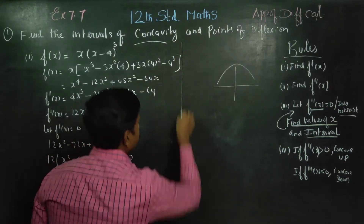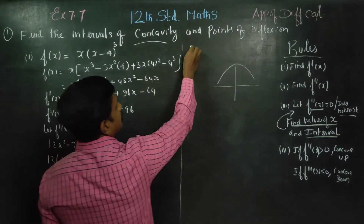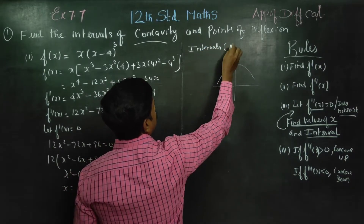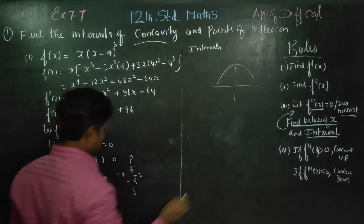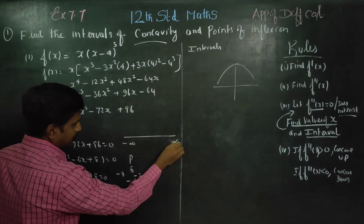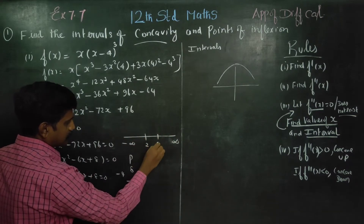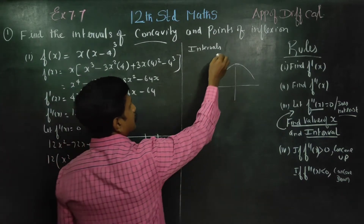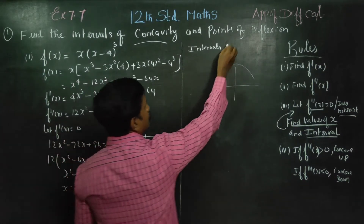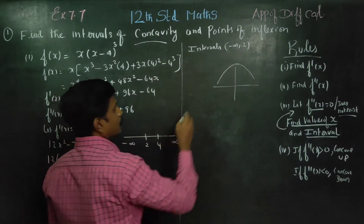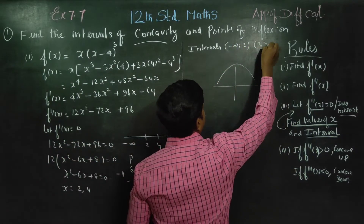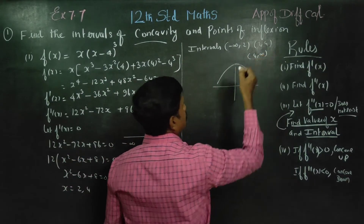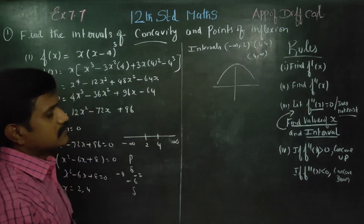What are my intervals? The x values are 2 and 4. On a number line from minus infinity to plus infinity, these divide it into three intervals: minus infinity to 2, then 2 to 4, and then 4 to infinity. These are my intervals.